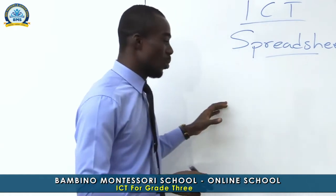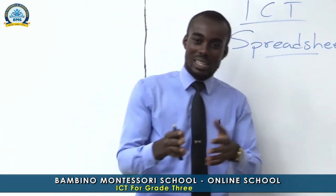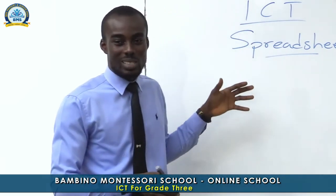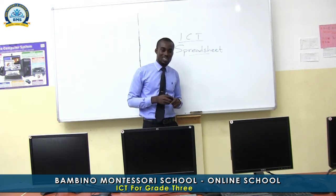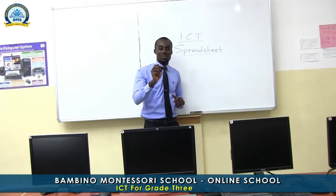We also went on to learn what a value is. A value is a number that can be used to perform a calculation. We also mentioned what a label is — a label contains characters, that is symbols, letters and numbers, that is used to name a cell. We went on to explain what the formula bar is: the formula bar is the bar that contains the content of an active cell. The name box displays the name of an active cell.